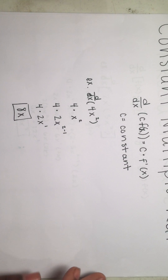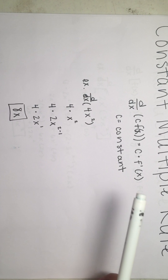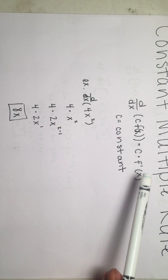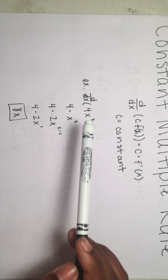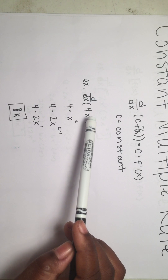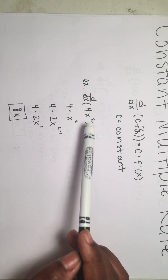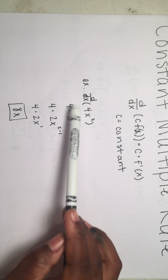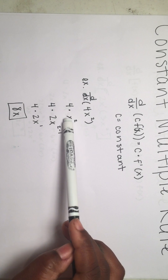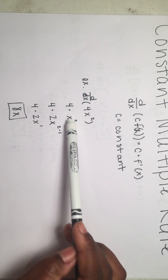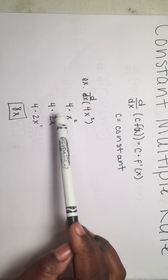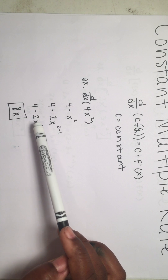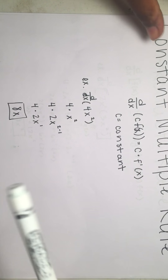The constant multiple rule states that you can separate your constant from the x variable term to help solve the problem. For example, the derivative of four x squared: separate the four from x squared, then it's four times two x raised to two minus one, which simplifies to eight x.